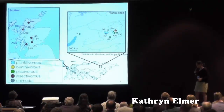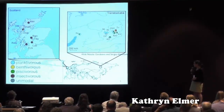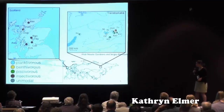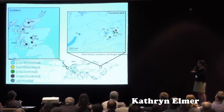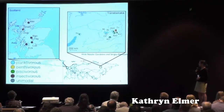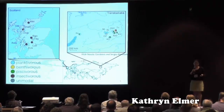The populations we looked at were in Scotland and in Russia. The Russian work was done in collaboration with Natalia Dordiva and Sergei Alekseyev, who provided many samples and a lot of information. We had populations from a number of lakes in Scotland and a number of lakes in the Transbaikal region, representing planktivores, benthivores, piscivores, and what I'll call unimodal populations — those that don't have different ecotypes.